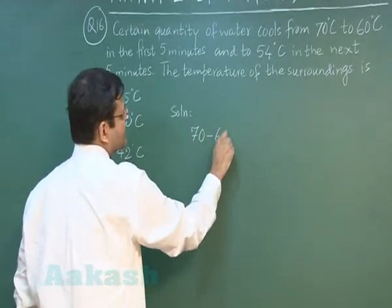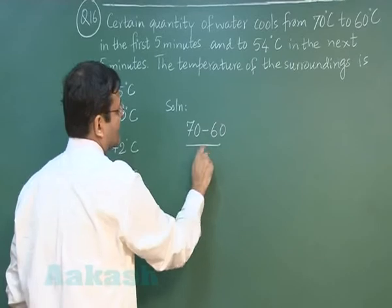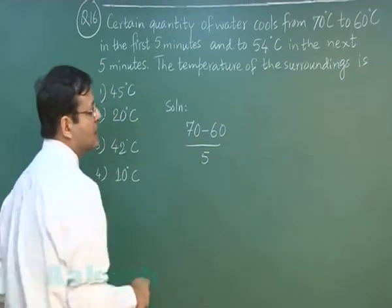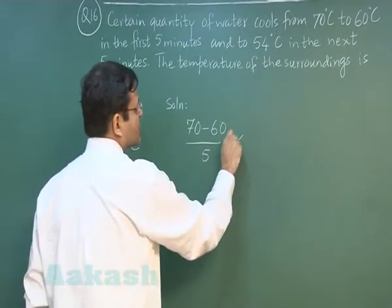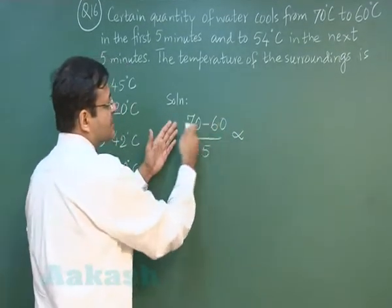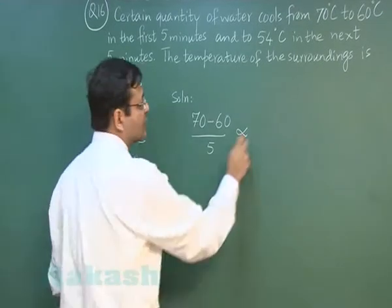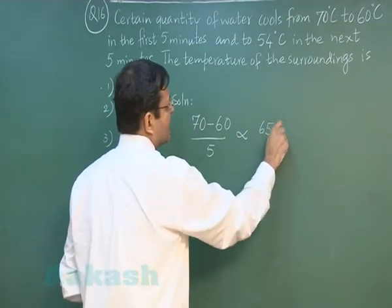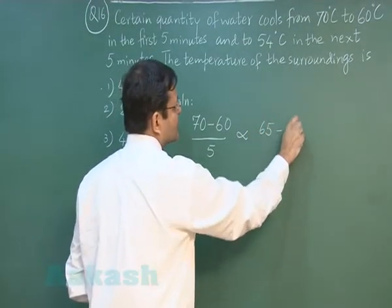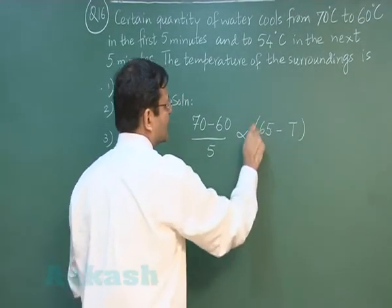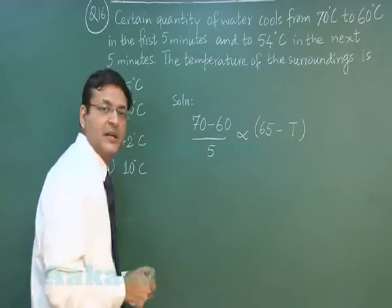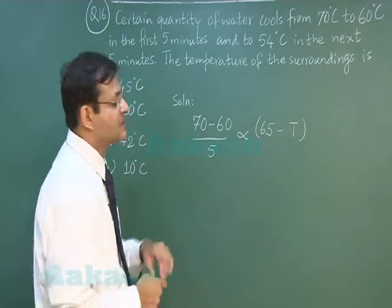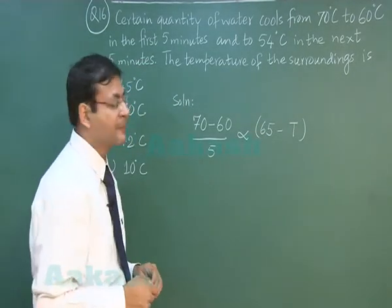Applying Newton's law of cooling: 70 minus 60 over 5 minutes is proportional to the average temperature of 70 and 60, which is 65°C, minus the temperature of the surroundings T. This forms the first equation.